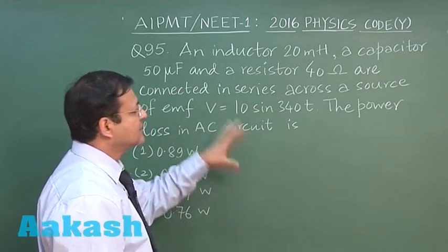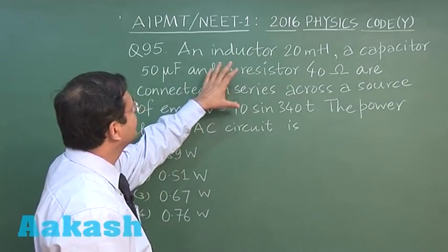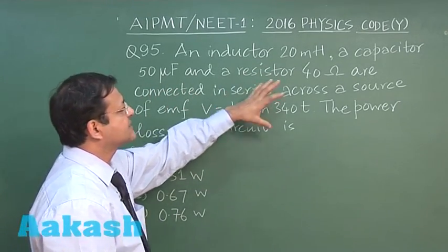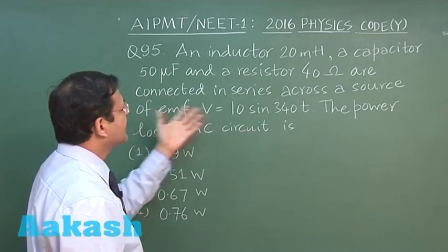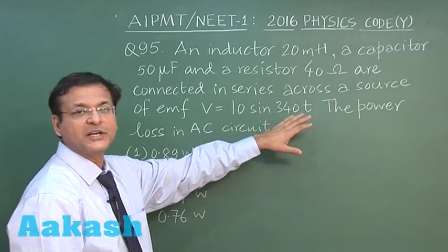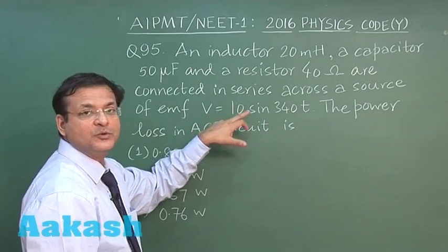You are supposed to calculate the power loss. You have been given the value of inductor 20 milli henry, capacitor value 50 micro farad, and the value of resistance as 40 ohm. They have been connected in series and the source emf is 10 sine 340t.